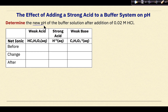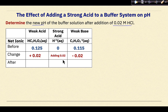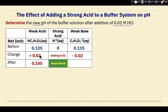Now we determine the new pH after the addition of 0.02 molar HCl. Initially, the weak acid concentration is 0.125, no hydrogen ions are present, and the weak base concentration is 0.115. The change occurs when we add 0.02 molar of the strong acid. The strong acid is neutralized by the weak base, and as a result 0.02 molar of weak acid is produced. The strong acid is neutralized, giving us 0.145 molar of weak acid and 0.095 molar of weak base.